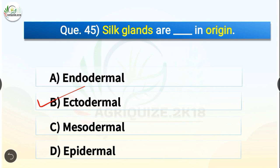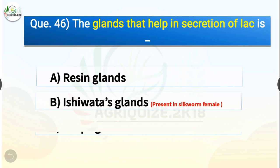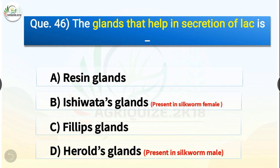Question number forty-six: The glands that help in secretion of lac are dash. The options are resin glands, Ishivata's glands, Phillip's glands, or Herold's glands. The correct answer is option A — resin glands. Whereas Ishivata's glands are present in the female silkworm and Herold's glands are present in the male silkworm.